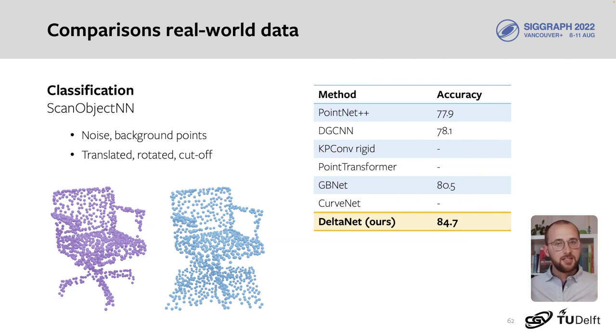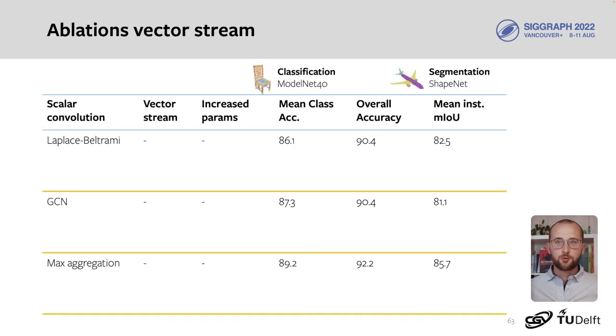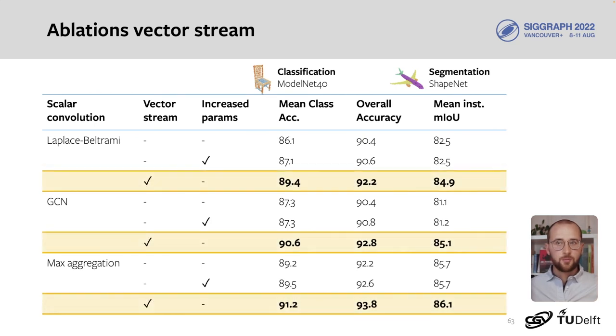Next, we investigated how much we actually benefit from directional information. We first tested three networks that don't use directional information in their convolutions. The Laplace-Beltrami operator, GCN, and a network with maximum aggregation. Then we test two variants. One where we just increase the number of parameters, and one where we add the vector stream. On both tasks, and for every network, the vector stream increases the accuracy.